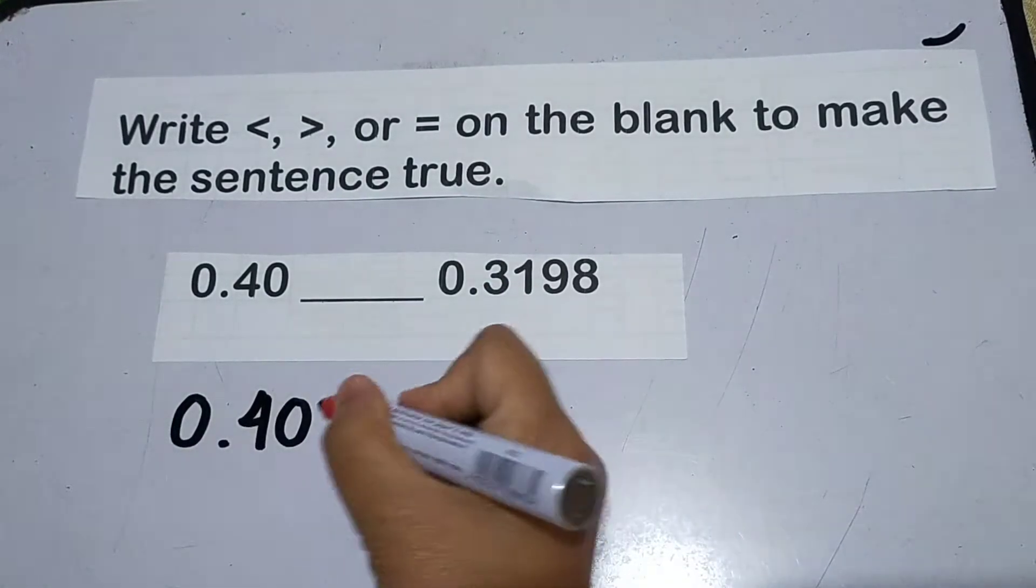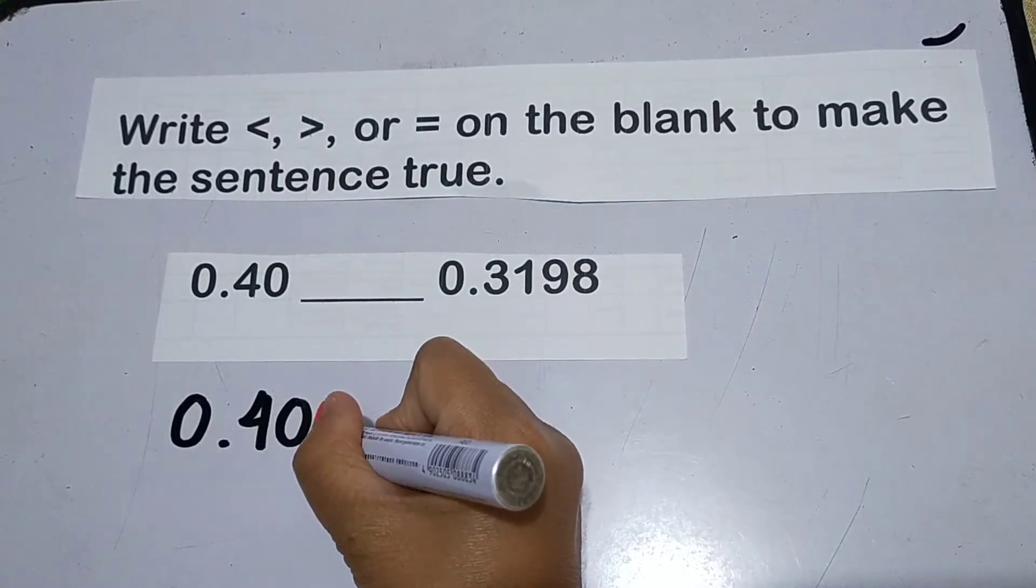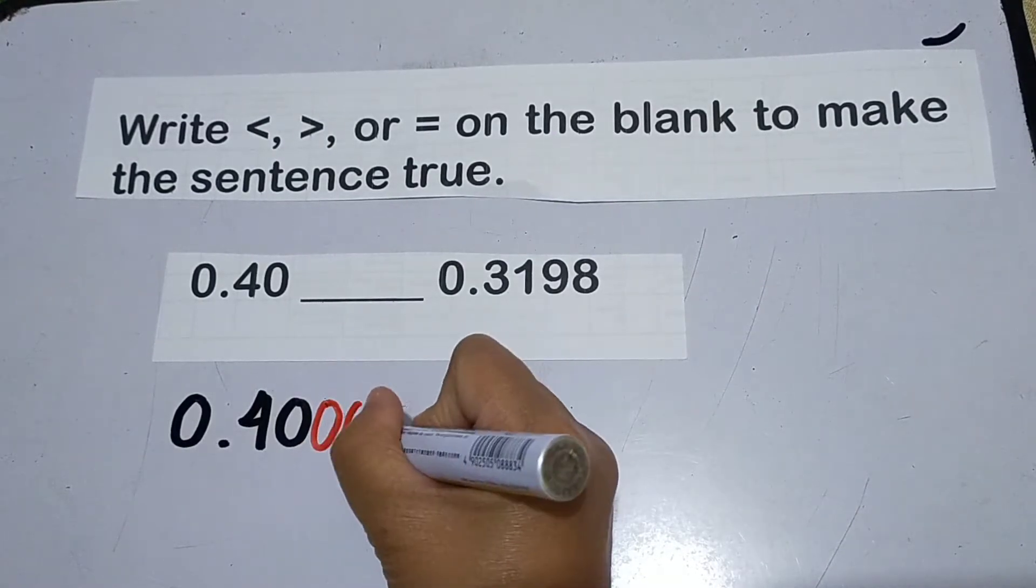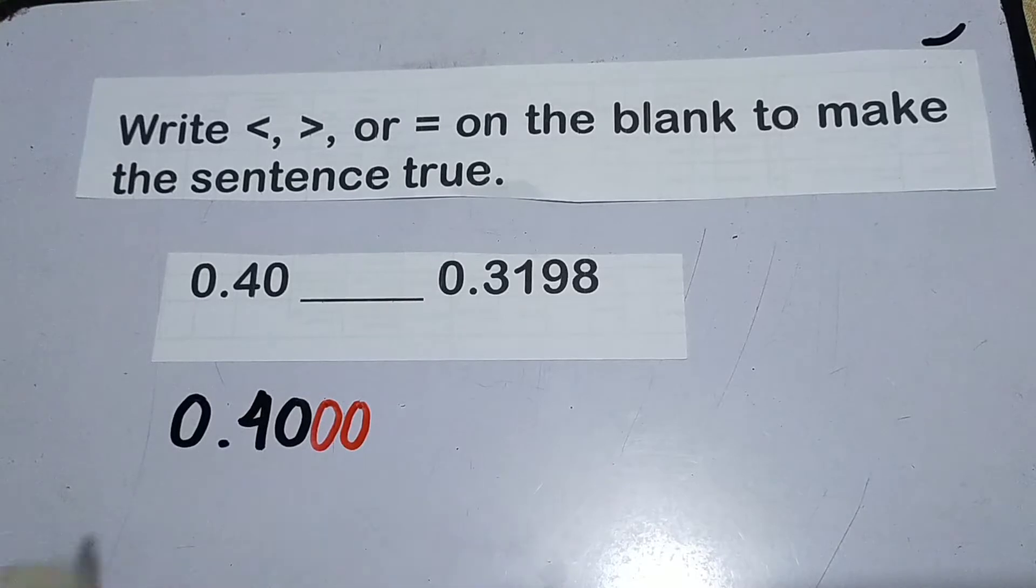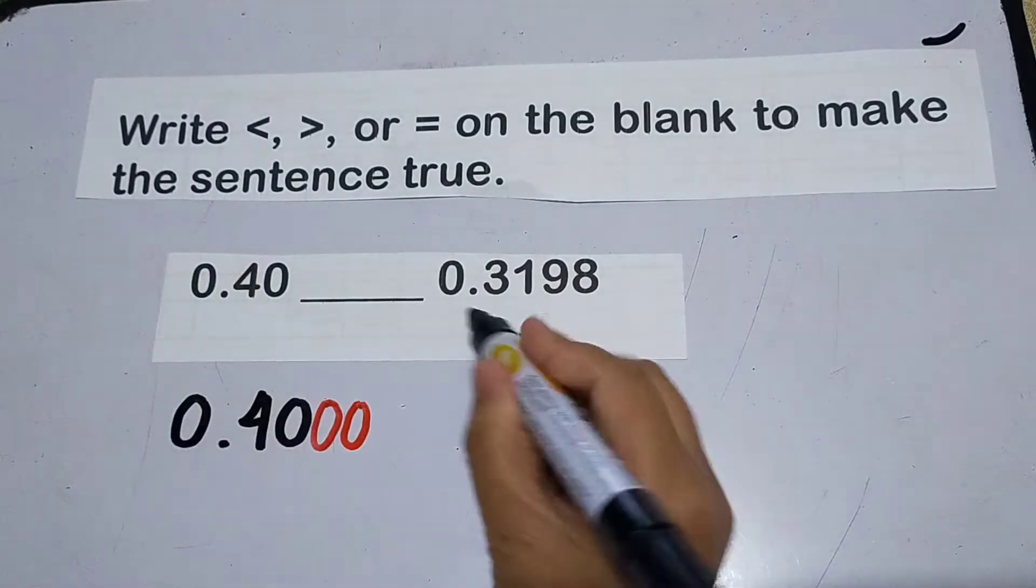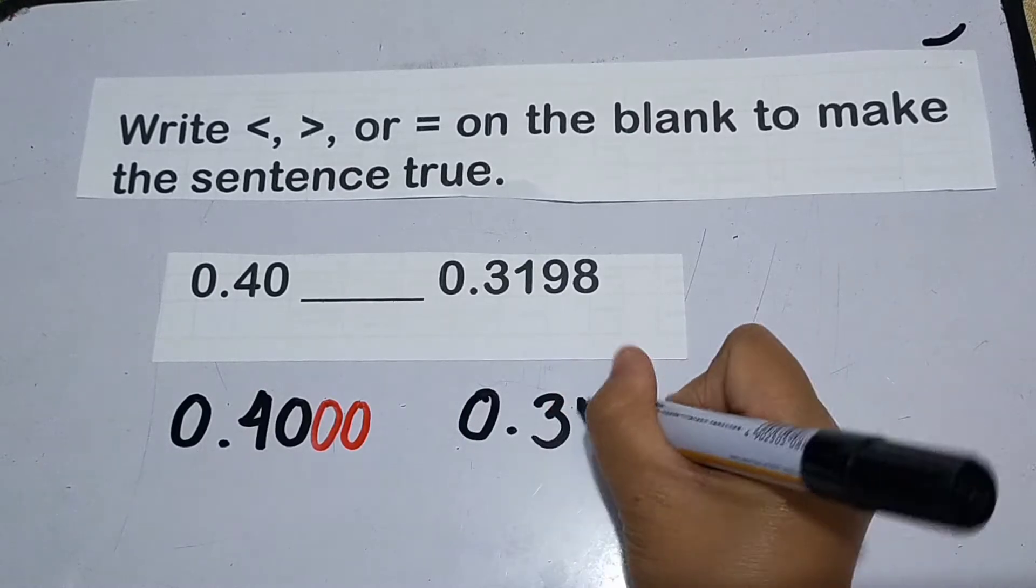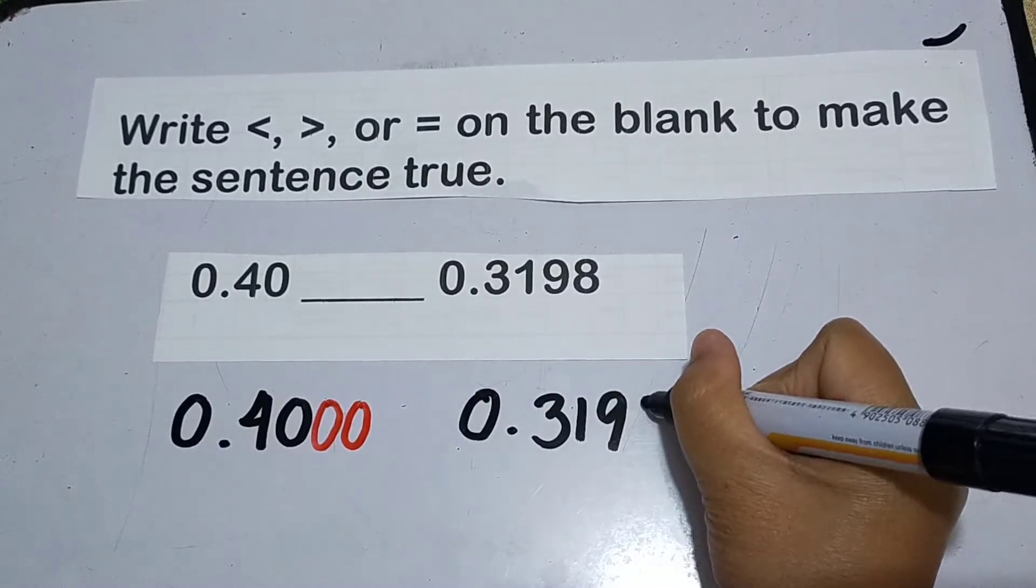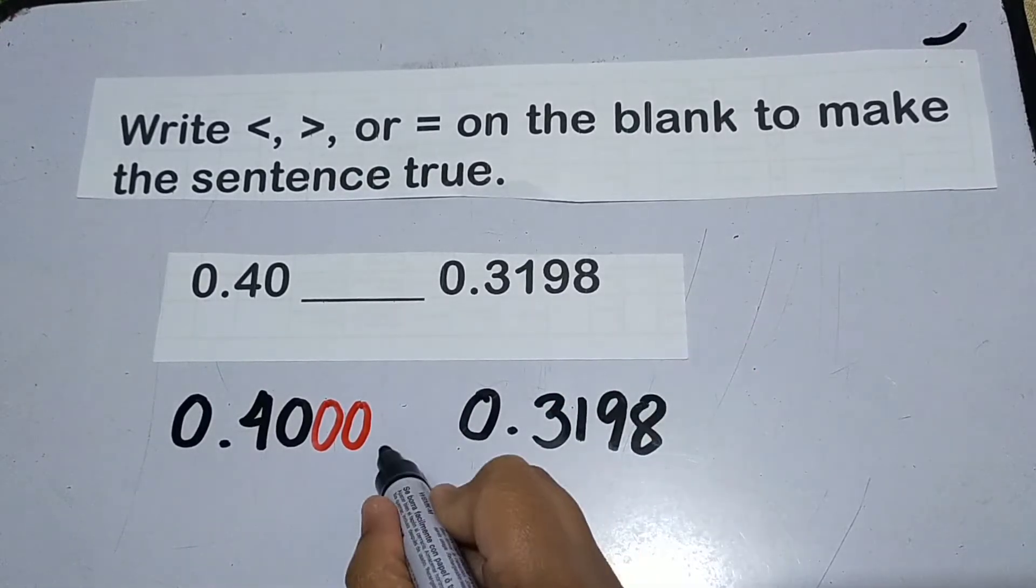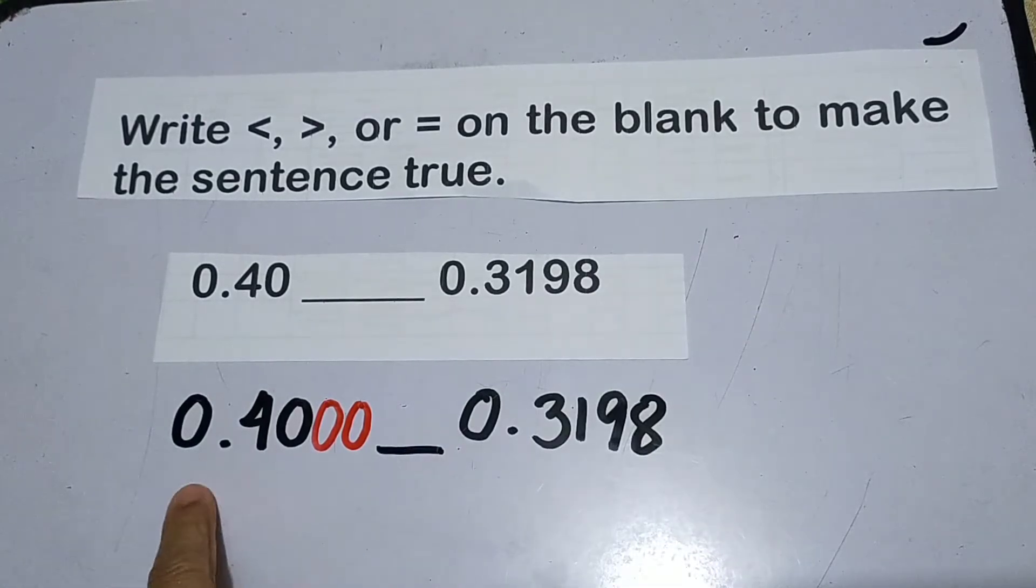So the technique is we can add imaginary zeros. Pwede tayong mag-add ng dalawang zero pa dito para maging apat din. And then afterwards, we rewrite the given. Tignan na natin. Basahin na natin.